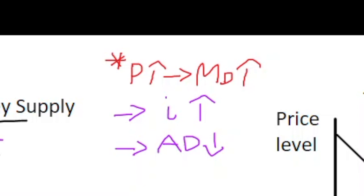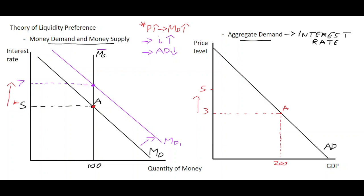So how we can show this on the right-hand side is we can say after the price increased, that caused money demand to shift right, that caused the interest rate to increase. And we can show that on our aggregate demand curve—we go from point A to point B.